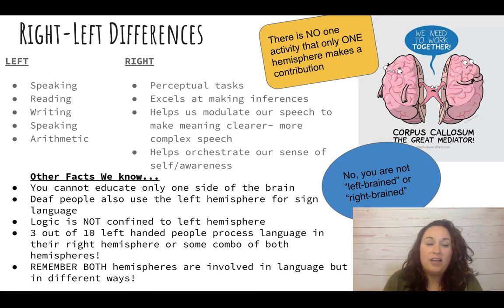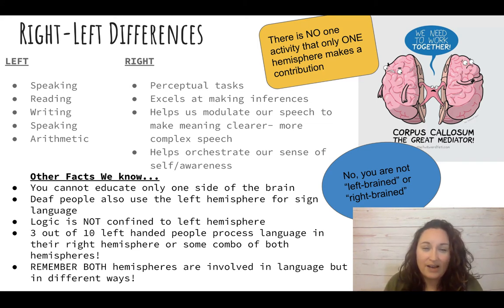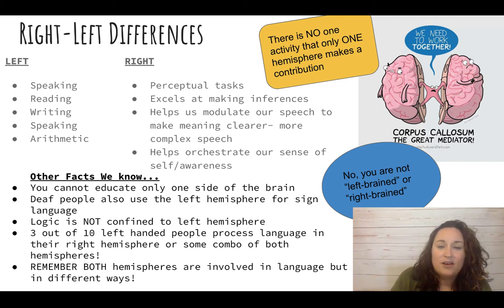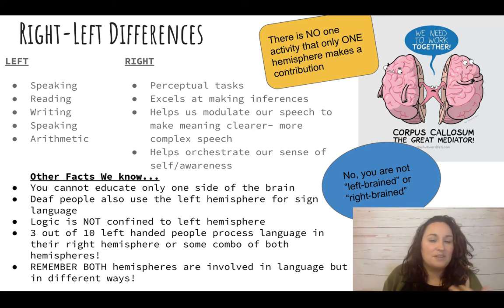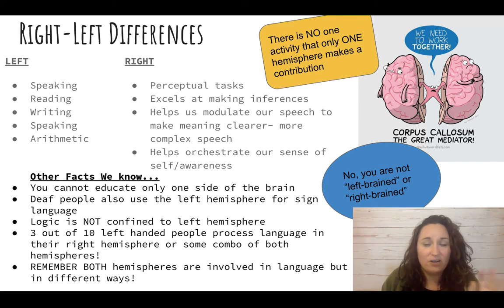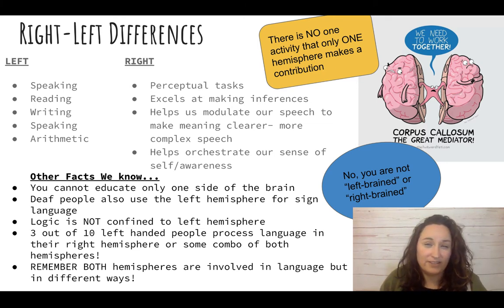The left hemisphere is responsible for speech, reading, writing, math, and speaking. The right hemisphere is responsible for more perceptual tasks — spatial-type things — and helps us make inferences, modulate our speech, and make it more complex. Think of tone of voice, the sing-songy way of speaking, or rhyming — that kind of thinking happens on the right hemisphere in general. Both hemispheres work together, and the right hemisphere also helps orchestrate our sense of awareness and physical space.